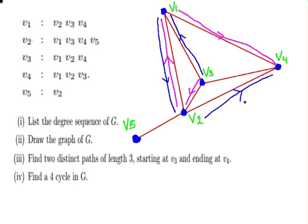So that's another possible path of length 3. So we have, in the second case, V3 to V1 to V2 to V4.